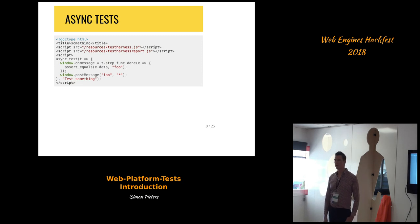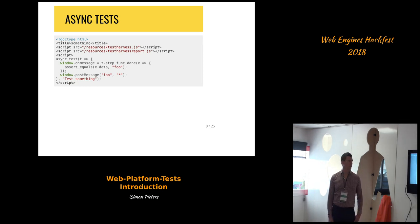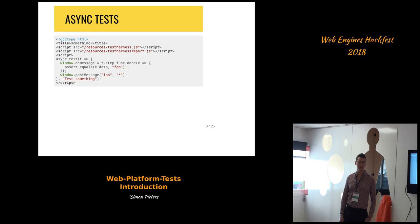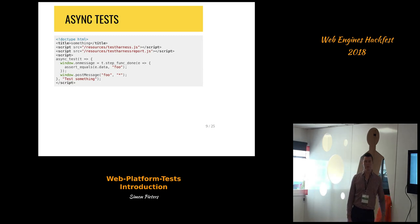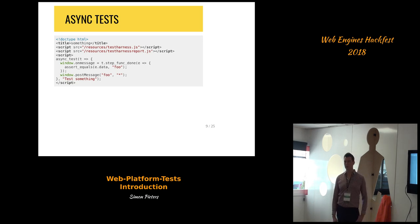There are also asynchronous tests for when you need to do callbacks or wait for an event to happen. You need to use stepfunc, which is a method in testharness.js, so that it can capture failing assertions. If you just use a vanilla function, it can't associate a failing assertion with a test, because you might have multiple async tests.